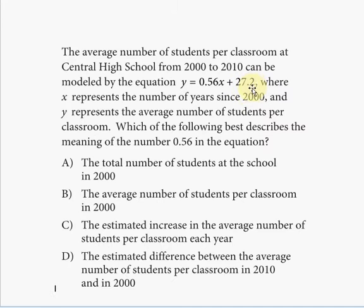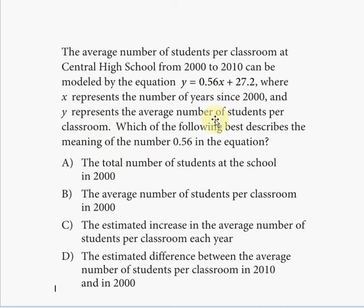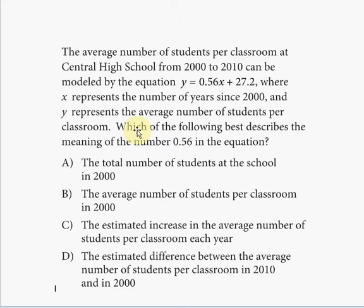As you go along, if you let x equal 1 — meaning the year 2001 — you add 0.56 to 27.2. So 0.56 average students per classroom are added relative to the year 2000. Since this is a linear equation, every year you constantly add 0.56 to the average number of students per classroom relative to the previous year. The average number of students per classroom grows by 0.56 students each year.